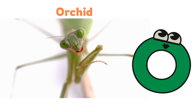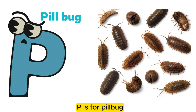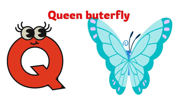O is for Orchid Mantis. O, O, O, O, Orchid Mantis. P is for Pill Bug. P, P, P, Pill Bug. Q is for Queen Butterfly. Q, Q, Q, Queen Butterfly.